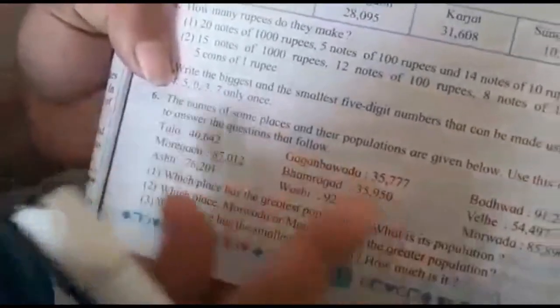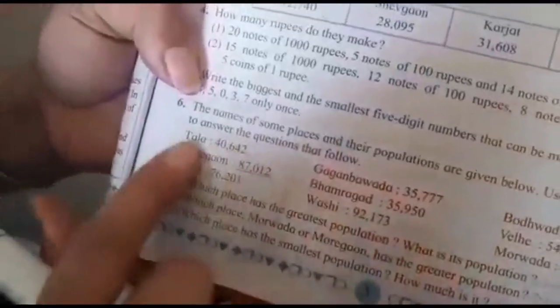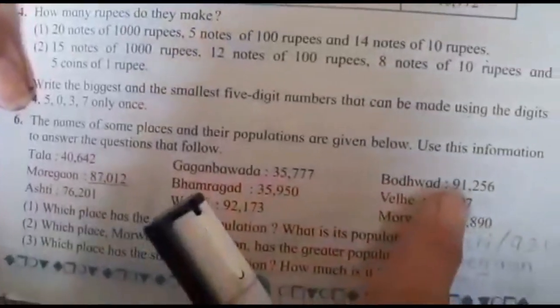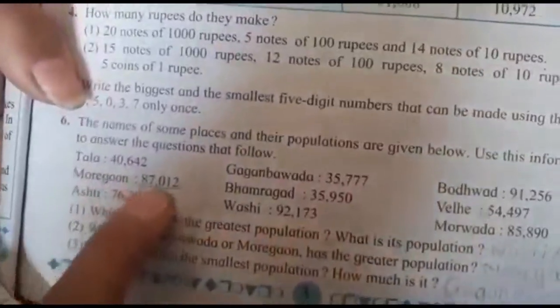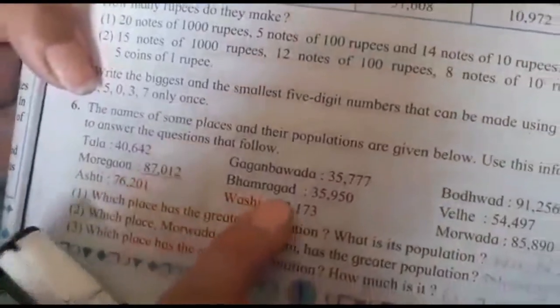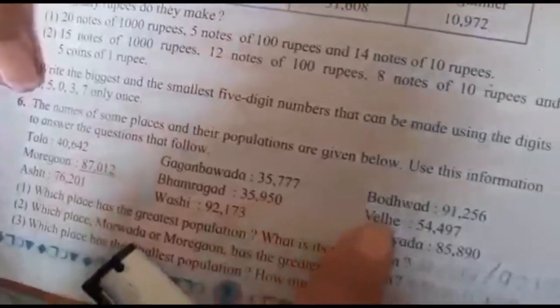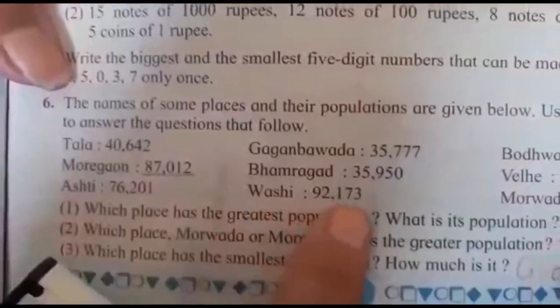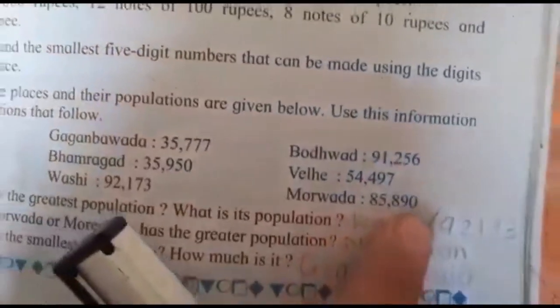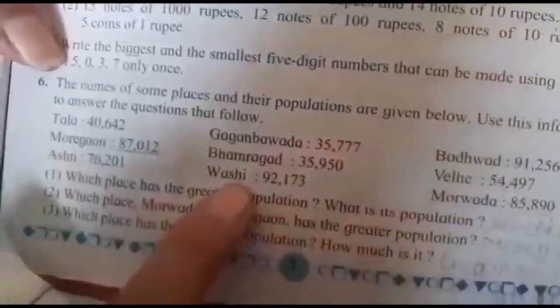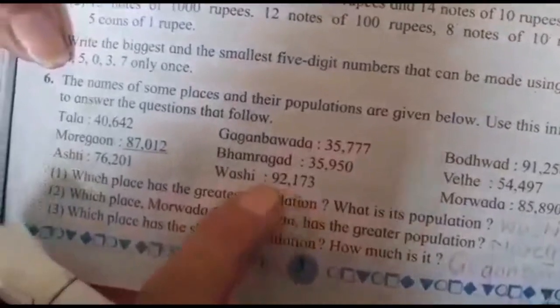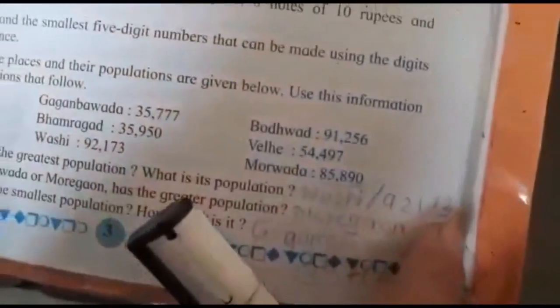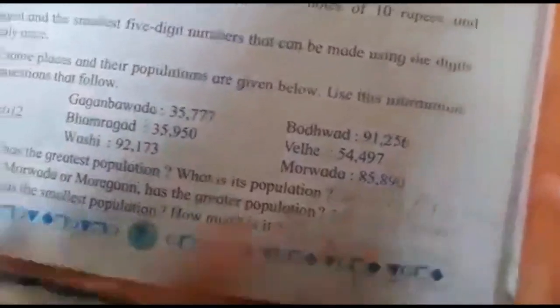When we read these numbers, we come to know which is the greatest number. Here we are reading: Tala 40,642, Gaganbawada 35,777, Borabara 91,256, Moregaon 87,012. What we have found is that this place Vashi has the greatest number, this is the greatest population. So here we write Vashi, its population is 92,173.